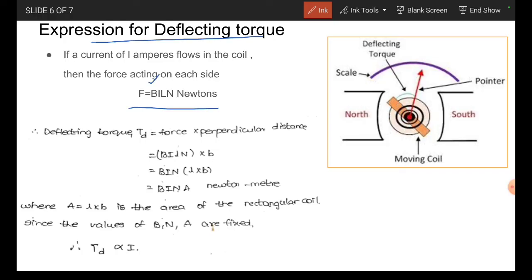B tends to the flux density, I tends to the current passing, L tends to the length or depth of the coil in meters, and N tends to the number of turns in the coil.